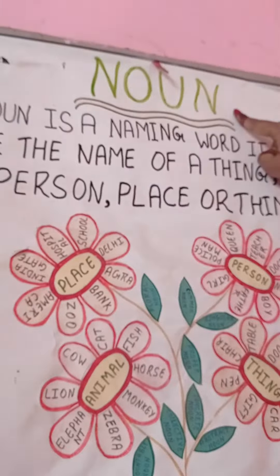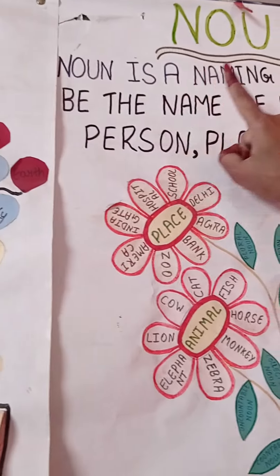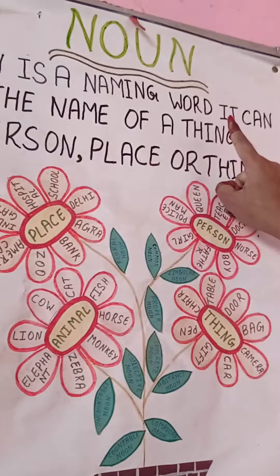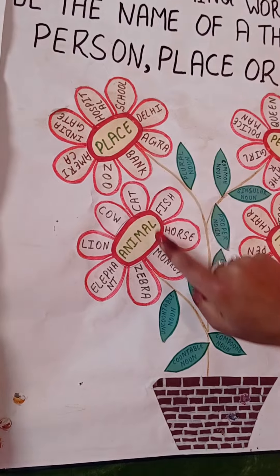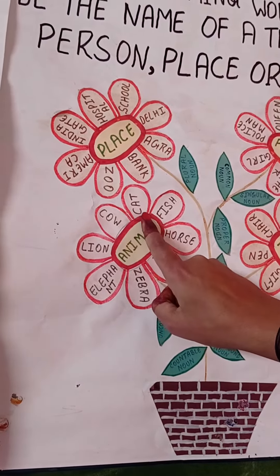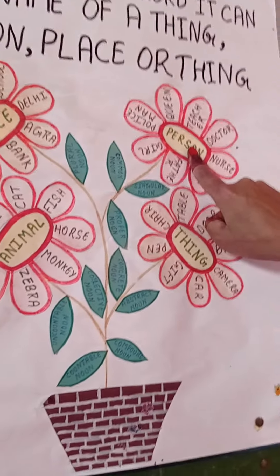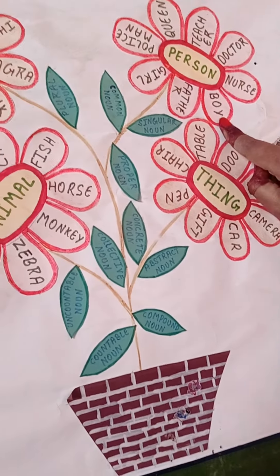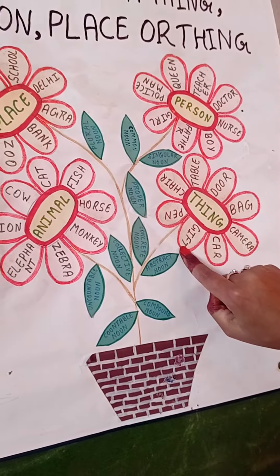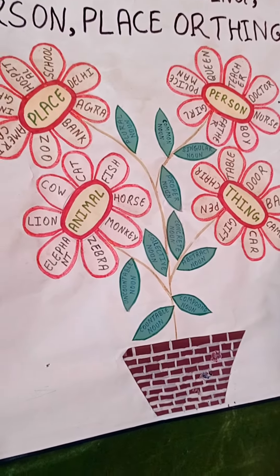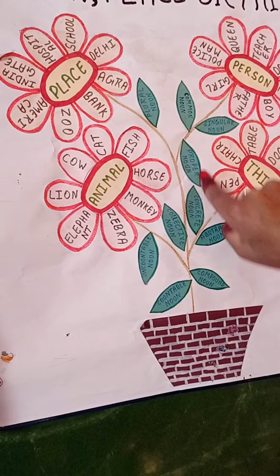A noun is a naming word. It can be the name of a place, person, or thing. Examples of places include India, hospital, and school. Animals include lion, cow, and cat. Persons include girl, boy, and nurse. Things include car and more. These are the parts of nouns.